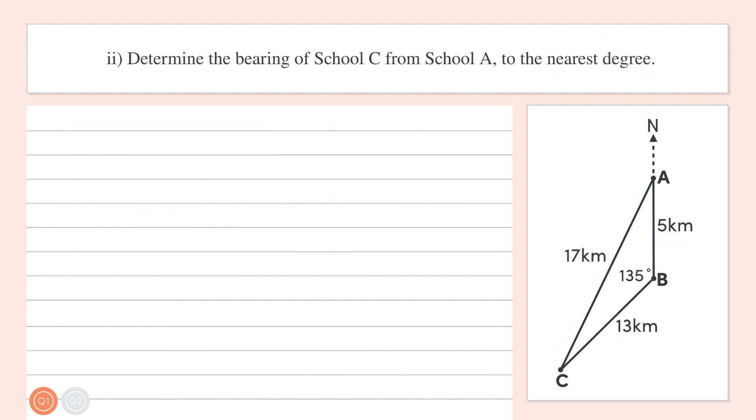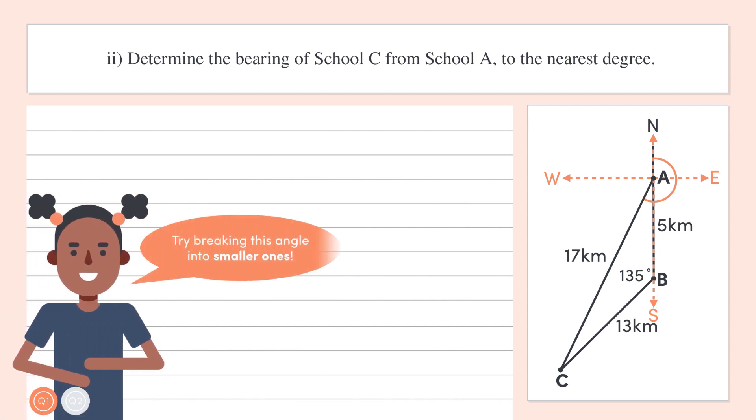We're asked to determine the bearing of school C from school A. Since a bearing is taken from school A, let's draw off the compass directions with A at the centre. The angle which we're going to need to find is this one here, the angle starting from directly north of A and going in a clockwise direction to where C is. It's good to note that if you're struggling to calculate any angles, try breaking them down into smaller, more manageable angles, which are easier to find.